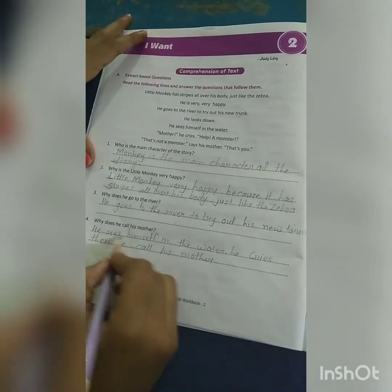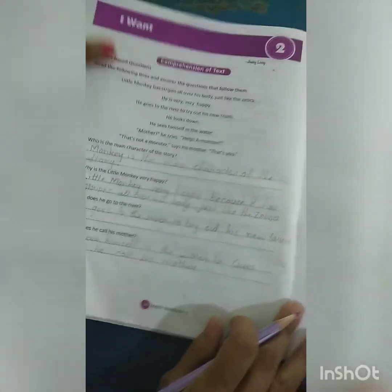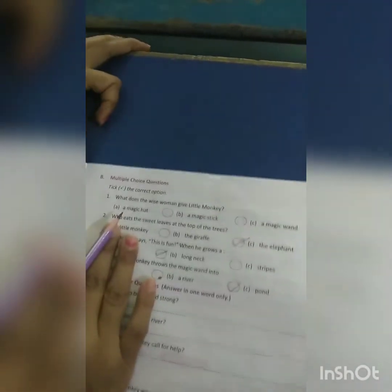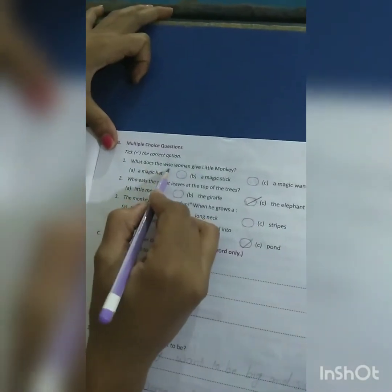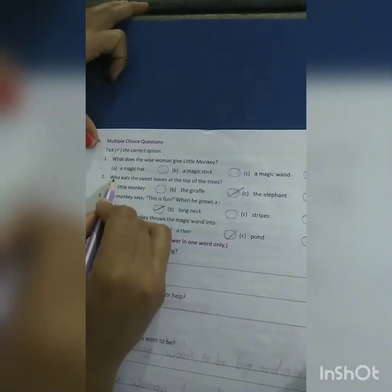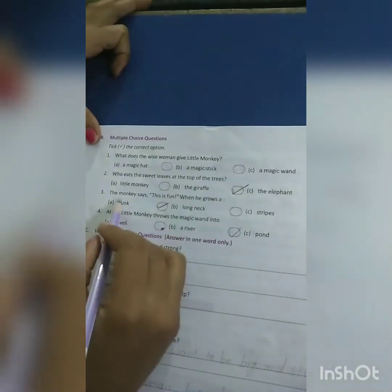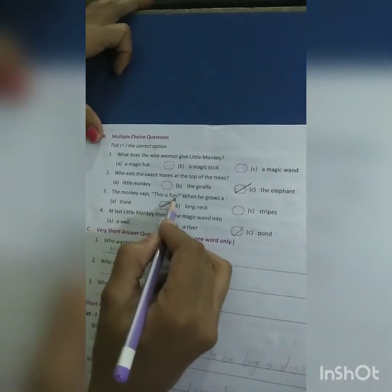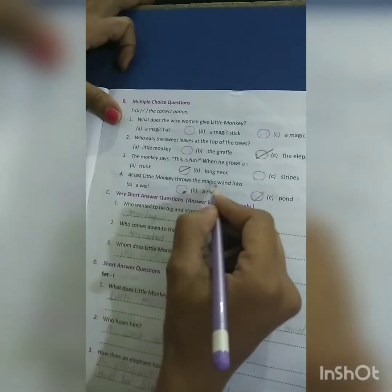Page number 15, multiple choice questions. Question number 1: What does the wise woman give the little monkey? A magic wand. Who eats the sweet leaf at the top of the tree? A giraffe. A monkey says 'this is fun' then he grows a trunk. At last, little monkey throws the magic wand into the river.